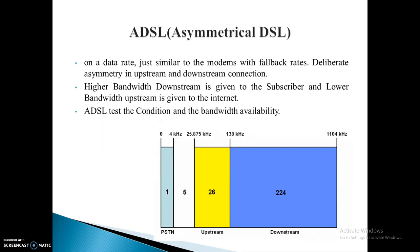About Asymmetric DSL: it has data rates similar to a modem with fallback rates, and deliberate asymmetry in upstream and downstream connections. Higher bandwidth downstream is given to the subscriber and lower bandwidth upstream is given to the internet. ADSL tests the condition and bandwidth availability. The PSTN uses 0 to 4 kilohertz bandwidth. For upstream, we use 25.875 kilohertz to 138 kilohertz bandwidth. For downstream — that which is given to the subscriber — we can use 138 kilohertz to 1104 kilohertz.